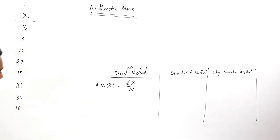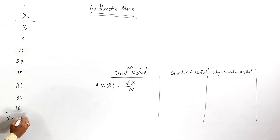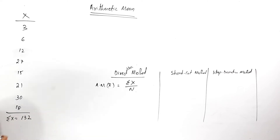First of all, we have to find out the summation of x, that is 3 plus 6 plus 12 plus 27 plus 15 plus 21 plus 30 plus 18. So the total of x, or total of the variables, is 132.